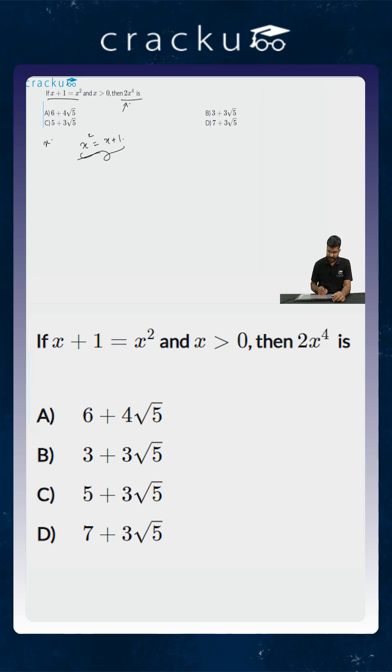As x squared is equal to x plus 1, when you square both sides, x to the power 4 is equal to x plus 1 whole squared. This is equal to x squared plus 2x plus 1.